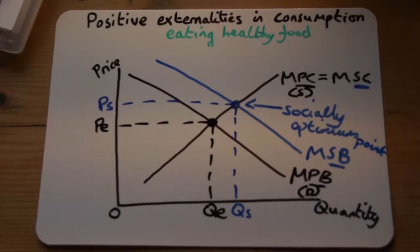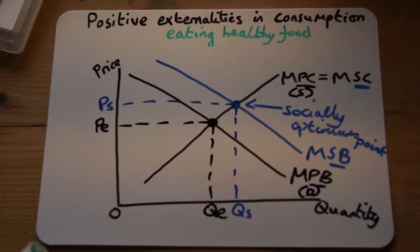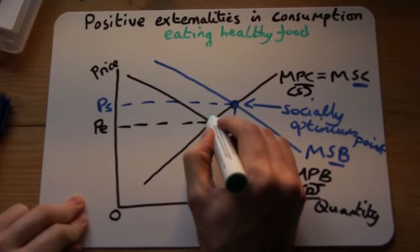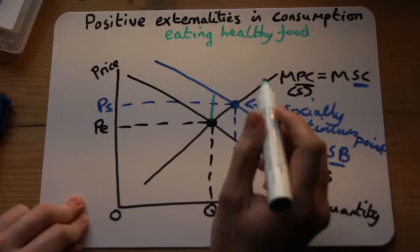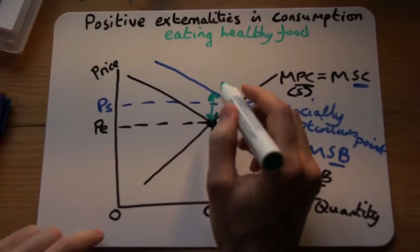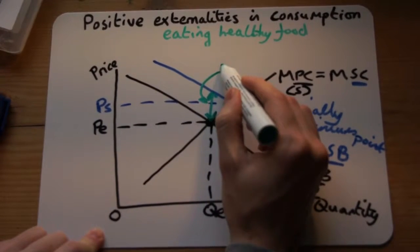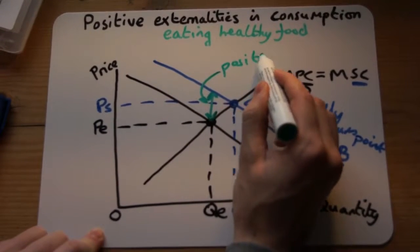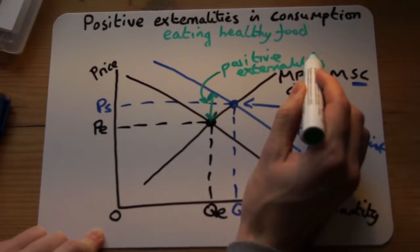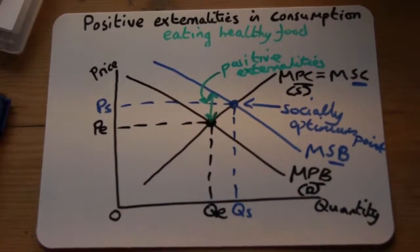We need to find the positive externalities. At the free market point, we draw a line up to the social benefit line — we are having positive externalities of consumption of this amount. This arrow is showing us the positive externalities, saying that we are at this point in the free market, but actually we are getting much more benefit than private consumers realise.